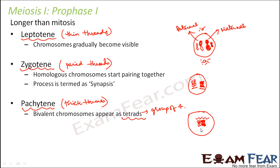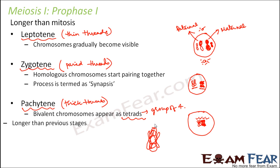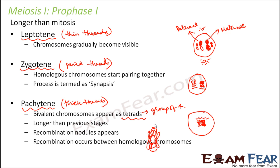This tetrad is also known as bivalent. In this stage, the sites where recombination takes place become visible — they are known as recombination nodules. These are the regions where crossing over will take place between the homologous chromosomes. Crossing over means exchange of genetic material between the homologous chromosomes. So these recombination nodules become very evident at this stage — pachytene. It is quite a long stage, longer than leptotene and zygotene. Recombination occurs between the homologous chromosomes.